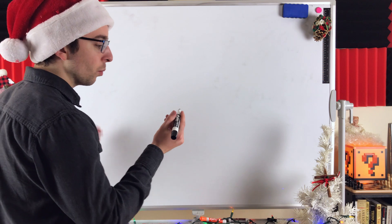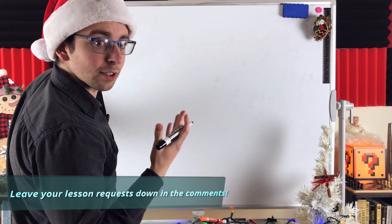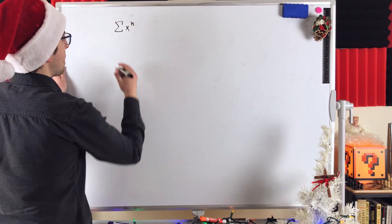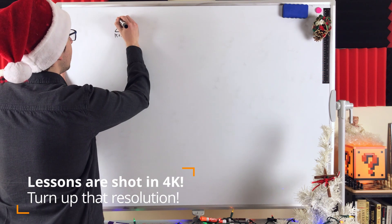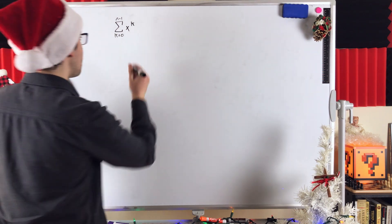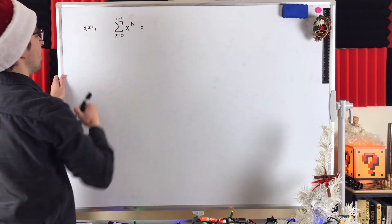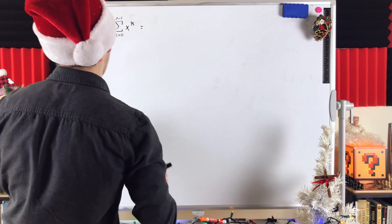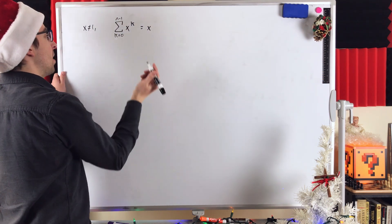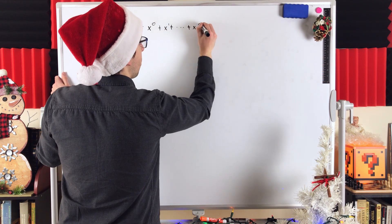So let's jump right into it. We'll write out the equality that we're going to prove. We're talking about the sum of the first n powers of real numbers. We can write that as the sum of x to the power of k going from k equals 0 to k equals n minus 1. And again, we're saying x could be any real number except 1.